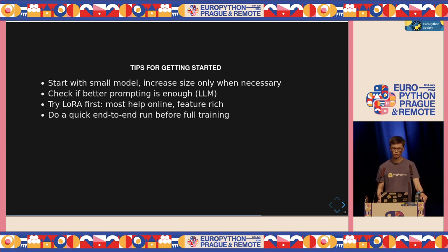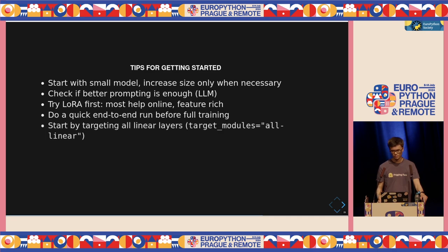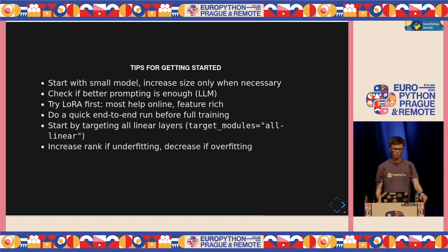It is important to do a very quick end-to-end run — a full training and deployment if possible — because there can be pitfalls. Some users were using distributed training and after three days of training found that the checkpoint was not working, wasting all that time. So do a quick end-to-end run with just a small amount of data, see if everything works, and then do the full run. Users often ask what layers to target — typically that should be all linear layers, which works best in most cases, and we have an extra option for that. If your model is underfitting, try increasing the rank of the LoRA adapter; if it's overfitting, decrease it. You can also apply dropout and other techniques you already know.